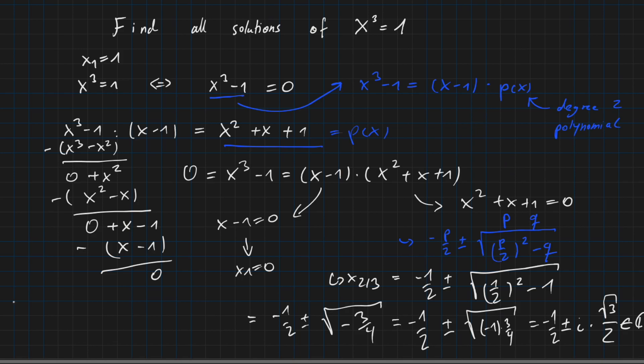So all in all, here on the left hand side, the solutions are 1, minus 1 over 2 plus i times root of 3 over 2, and minus 1 over 2 minus i times root of 3 over 2. These are three solutions.